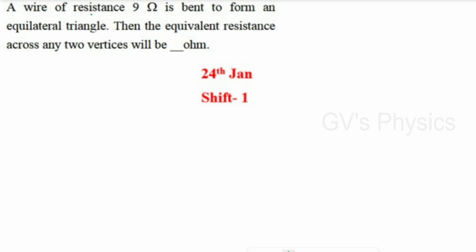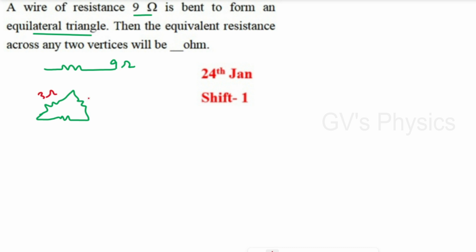First question: A wire of resistance 9 ohm is bent to form an equilateral triangle. Find the equivalent resistance across any two vertices. Since the triangle is equilateral, all sides are equal, so the 9 ohm resistance is divided equally into three parts — 3 ohm, 3 ohm, and 3 ohm.